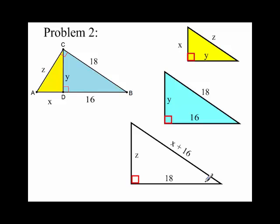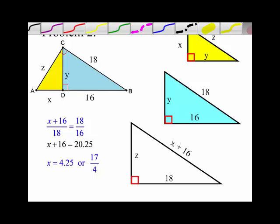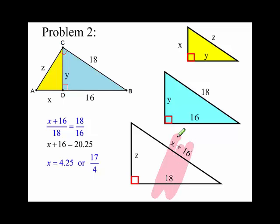So let's solve for X. I didn't highlight it, but X, let's see, we've got this, X plus 16 over 18. And then, we've got two pretty numbers right here, 18 and 16. So we're good to go here. So I got the fraction set up.